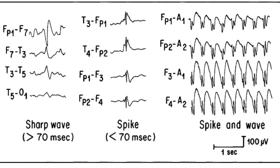The epileptiform discharge is a high voltage wave. Morphologically, they have a shorter, low amplitude upslope. However, the downslope is longer and has a high amplitude. Another typical feature is the after-going slow wave, which is immediately followed by sharp waves. They are different from background waves and clearly stand out. The polarity of the majority of surfaces is negative.